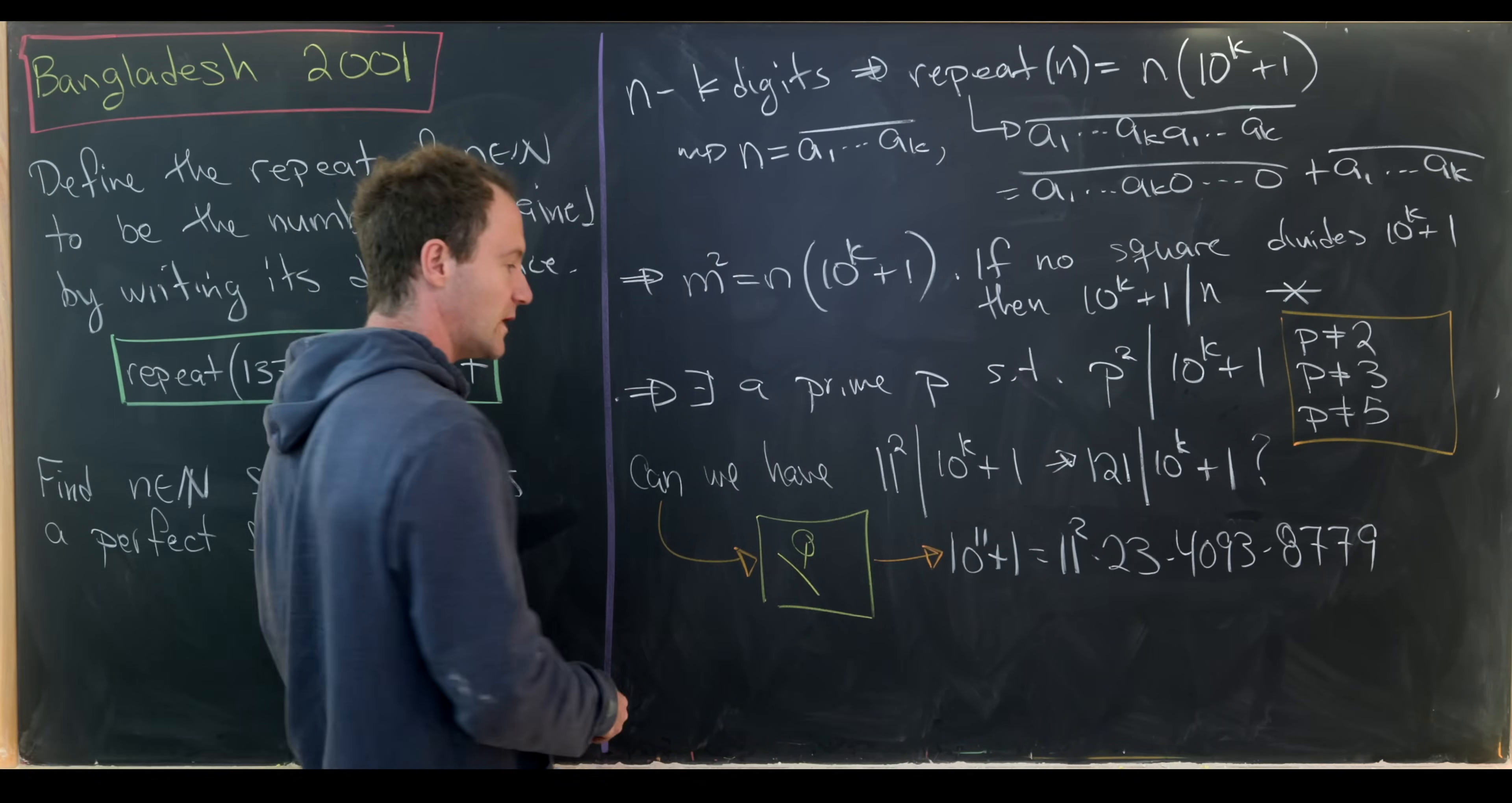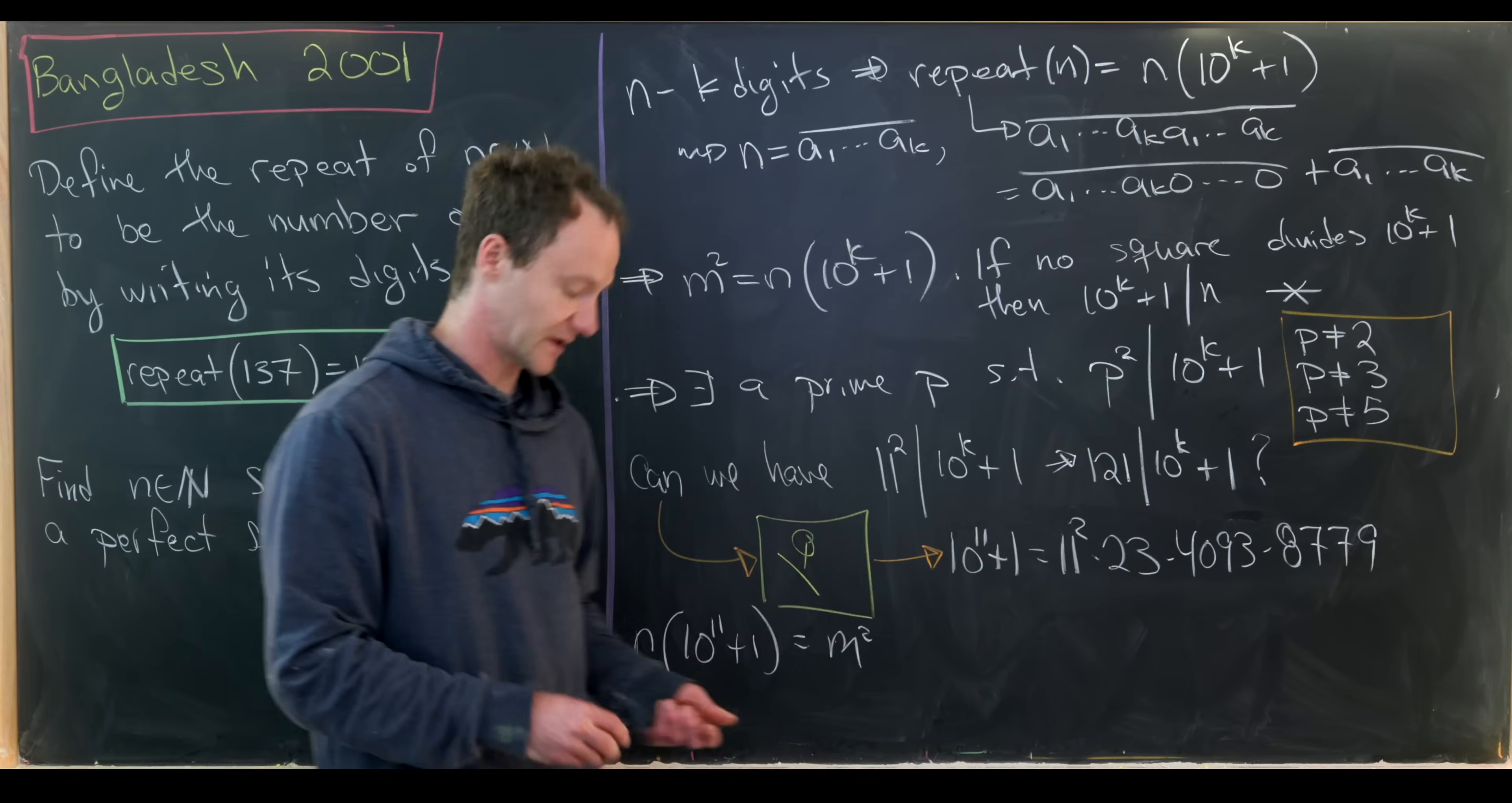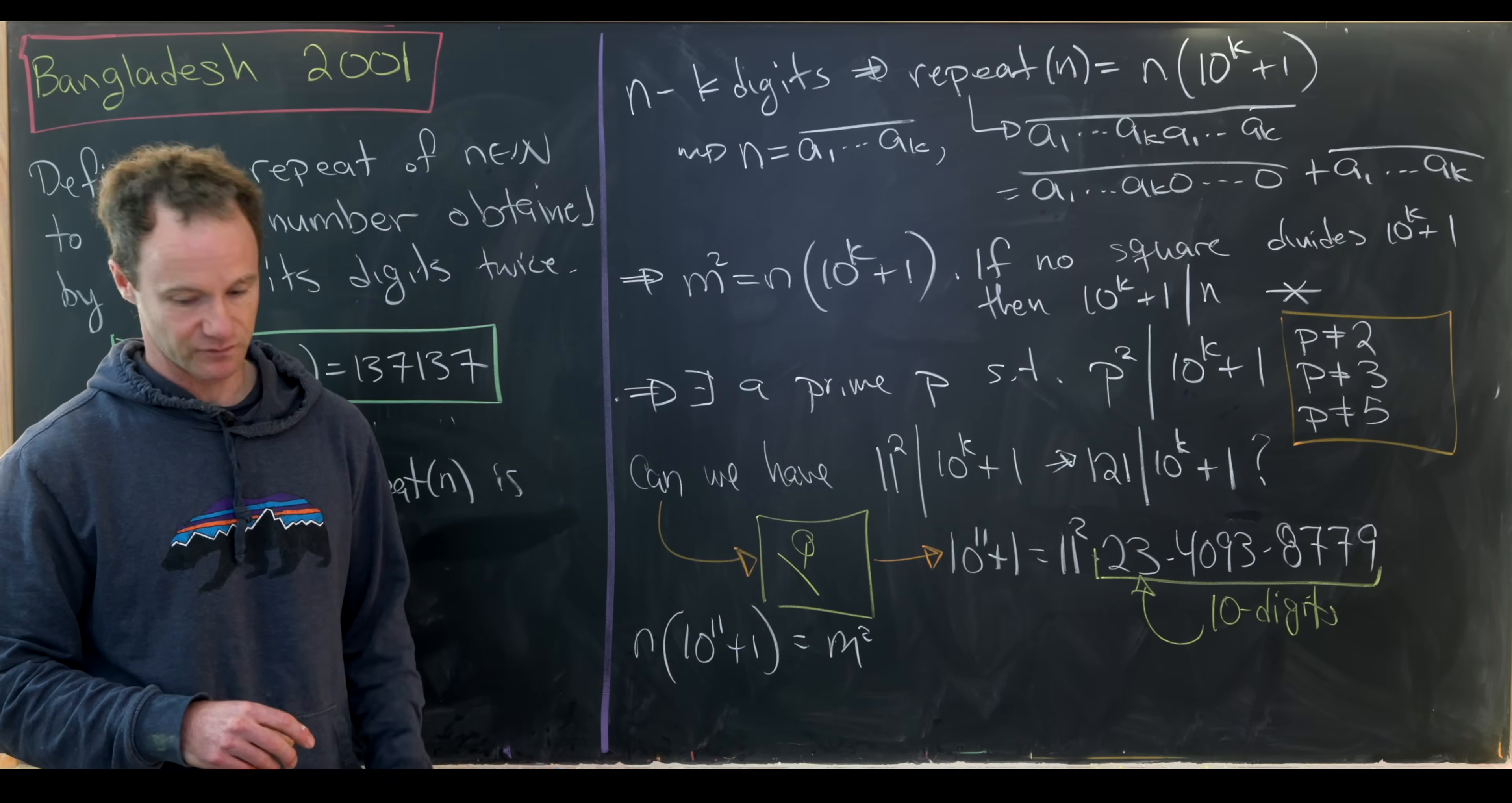And so just to reiterate, what we need is we need n times 10 to the 11 plus 1 to be a perfect square, m squared. So we've got to figure out what n is. Well, let's notice that we could just keep all of the factors of 11 outside of n given that we've got a perfect square in there. So maybe a good first place to look is to look at this leftover bit and maybe that could play the role of n. But it can't because if you multiply this out, you'll get something that is 10 digits long. And let's notice that because of our exponent right here is 11, we need this thing to be 11 digits long.